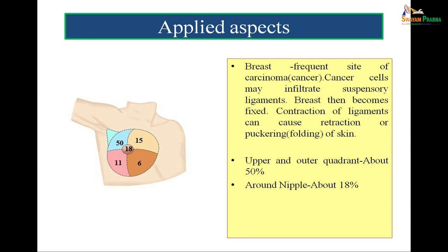There are different quadrants of the breast, and this figure shows the incidence of breast cancer in different quadrants. The upper and outer quadrant is the area where maximum incidence of breast cancer takes place — 50%. Eighteen percent of breast cancer is reported around the nipple.